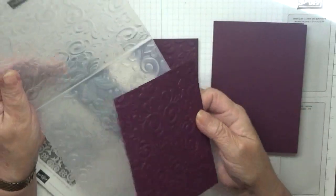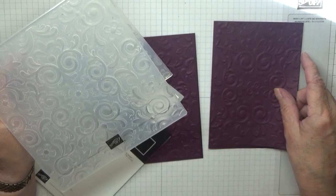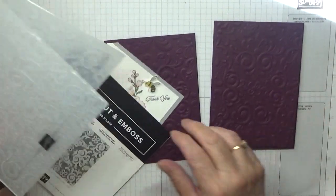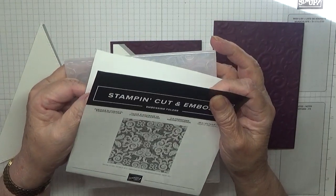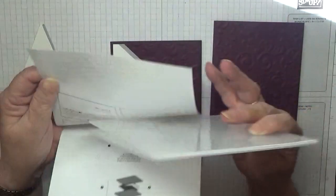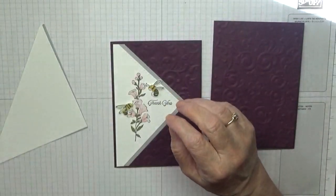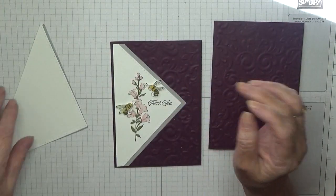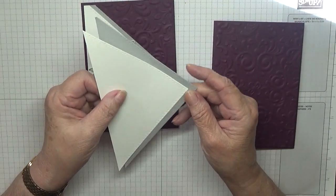That's going to go on top there. The embossing folder I used is Parisian Flourish 3D from Stampin' Up. Then I have got two triangles—these are stitched triangles, one in Smoky Slate and one in Basic White.